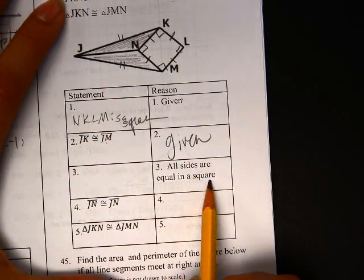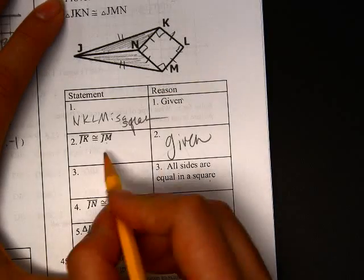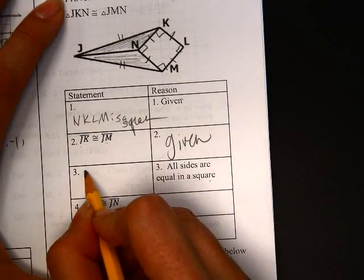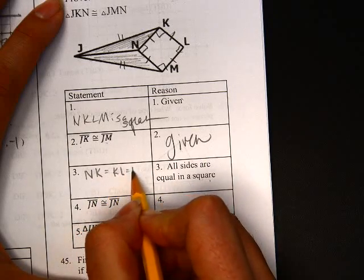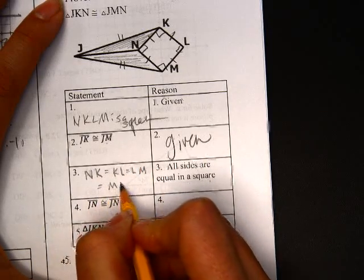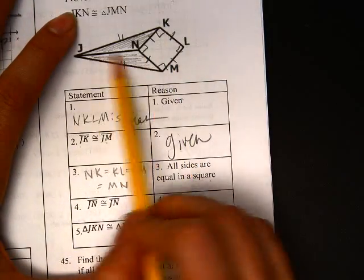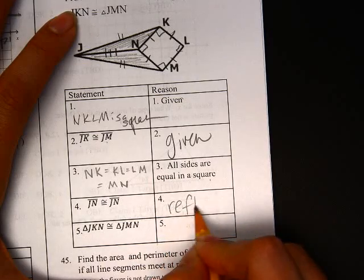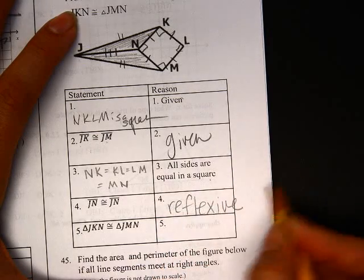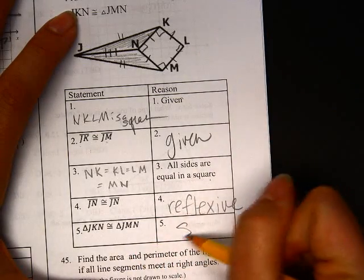And all sides are equal in a square. And that square would, we could say that because NK equals KL equals LM equals MN. And these guys are equal, ooh, I know that one, reflexive. And the two triangles are congruent because it has SSS.